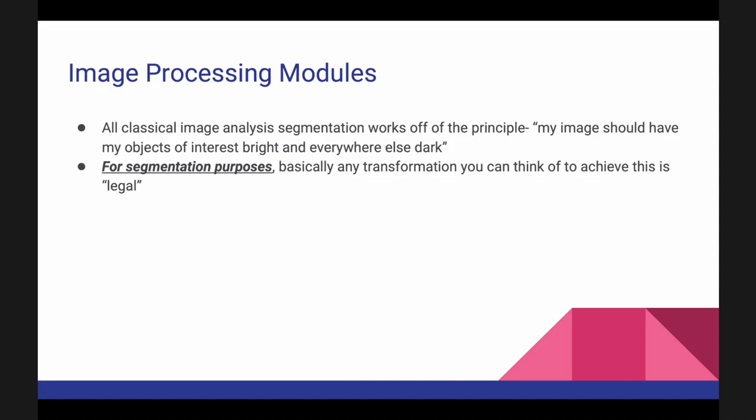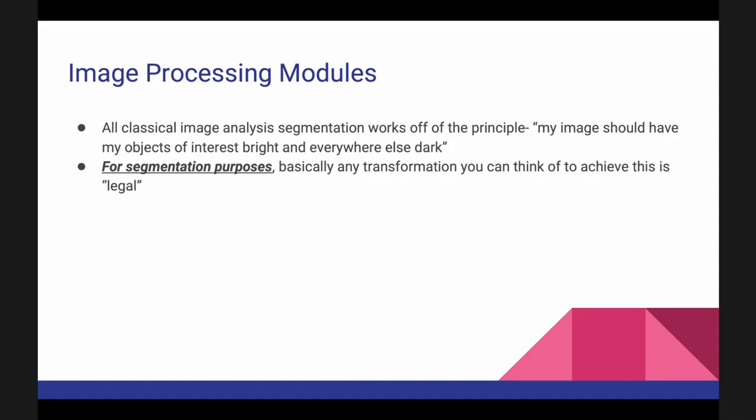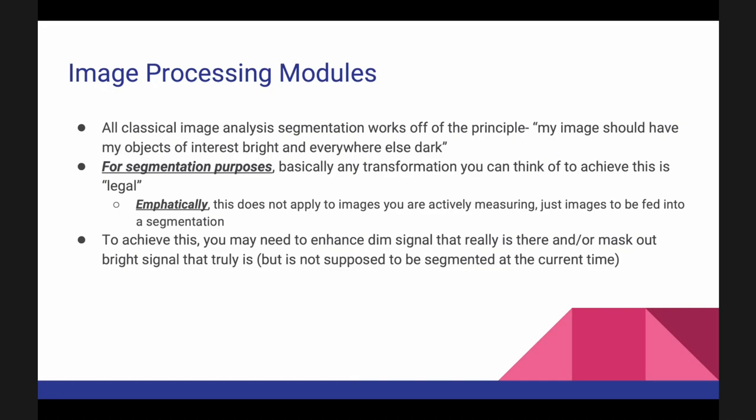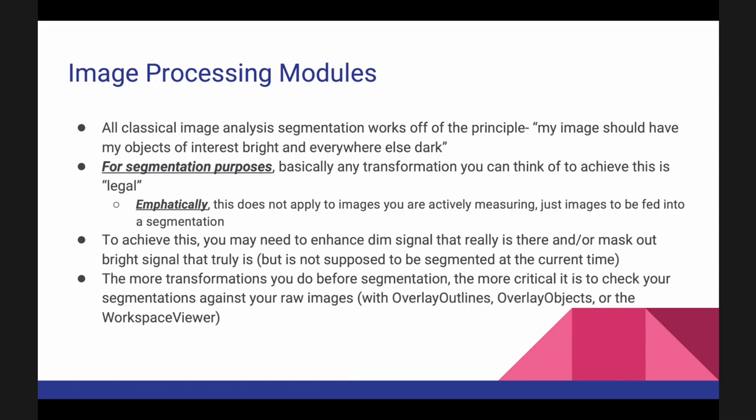You have to be careful though — you don't want to measure images you've manipulated. You can manipulate images to find objects, but always report unmanipulated measurements. You might need to enhance dim signal that's really there but hard to see, or mask out bright objects — dead cells, for example, are often much brighter than live cells, so you might need to remove them. The more transformations you apply, the more you want to check your segmentations against your raw images.